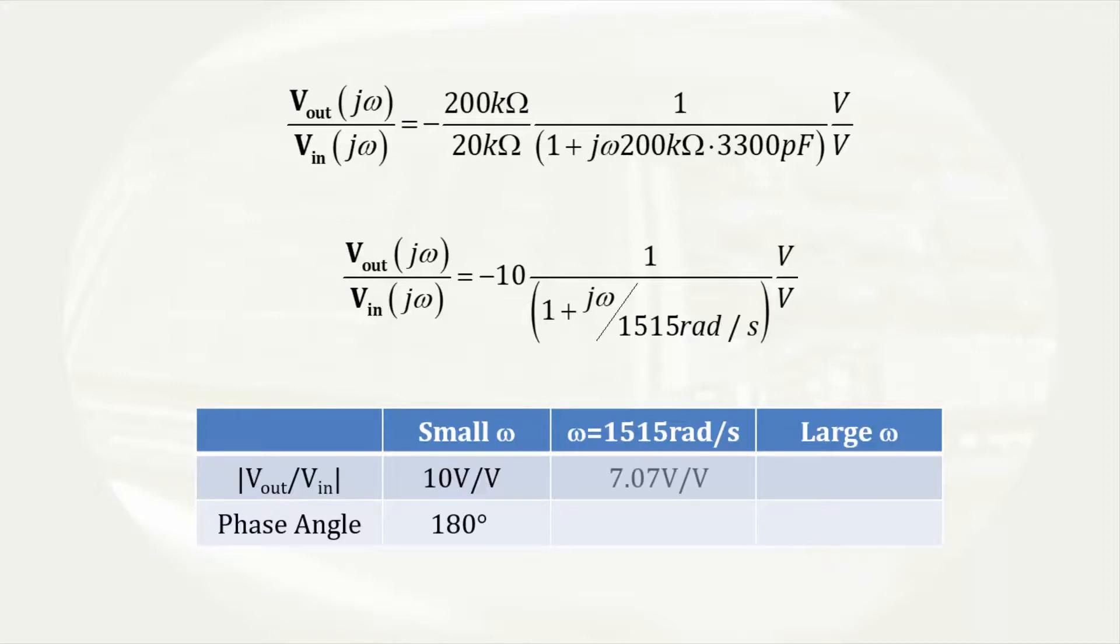When the angular frequency is such that the imaginary portion of the denominator becomes j times 1, the magnitude of the transfer function is reduced by a factor of 1 over the square root of 2. That also corresponds to a phase angle of 45 degrees in the denominator which subtracts from the original 180 degrees resulting in a phase angle of 135 degrees.